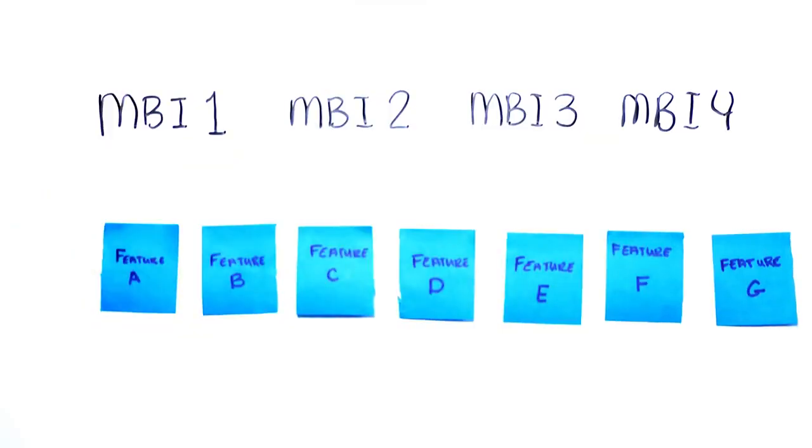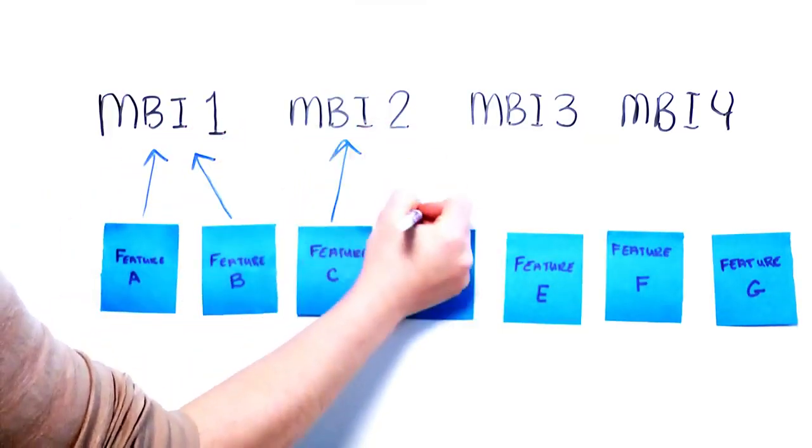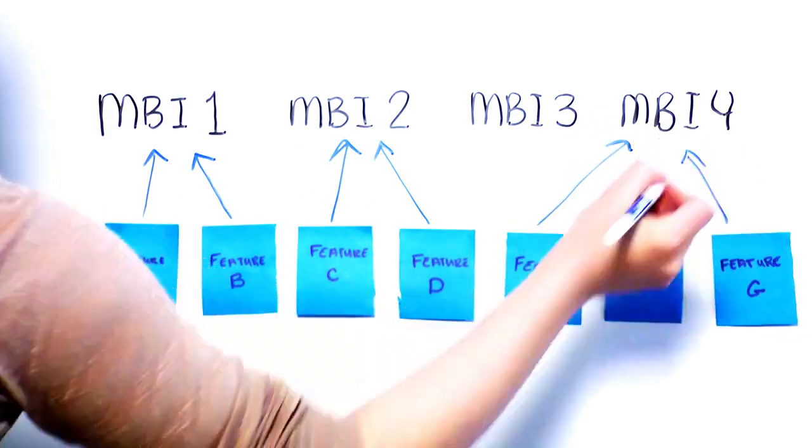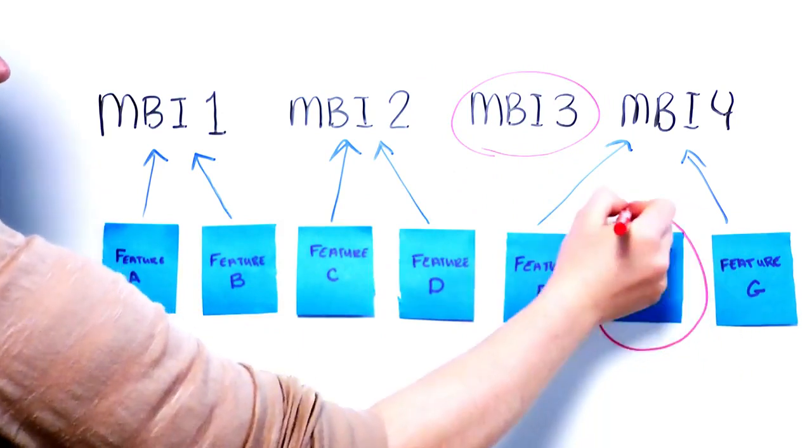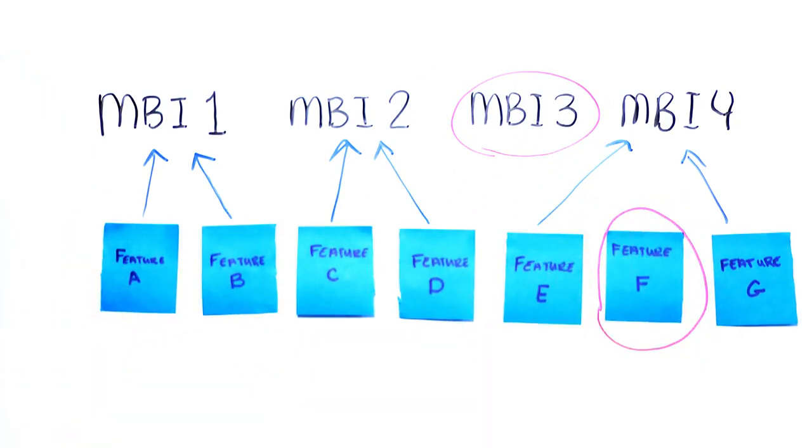We discovered a few gaps. There were MBIs without features, there were features without MBIs, there were features which were far too large, and features that were really user stories that should be subordinate to other features. We used sticky notes in a contrasting color to draft the missing features and added them to the board.